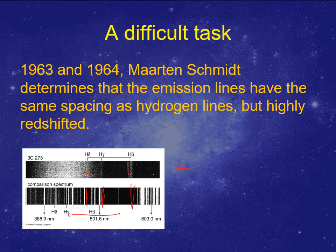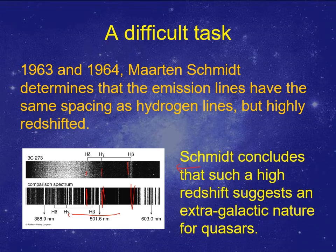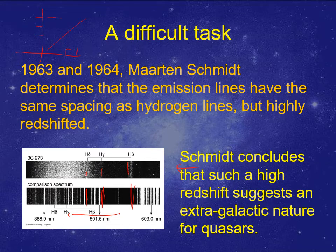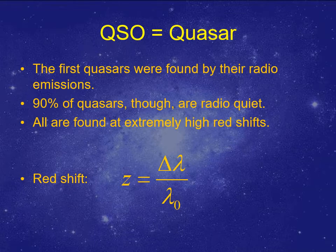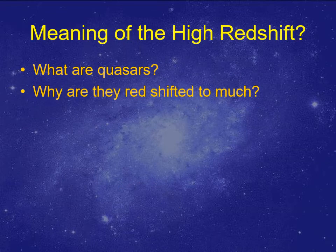Martin Schmidt made these determinations, and all of a sudden we realized we're looking at something super redshifted. Schmidt insisted that meant they were super far away. There's a relationship — the Hubble relationship — that the bigger the velocity, the bigger the distance. Redshift times the speed of light gives the velocity, which would give a huge velocity and thus a huge distance. So why are quasars so very redshifted?